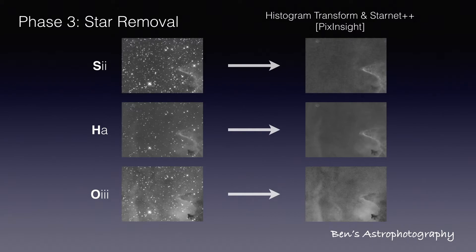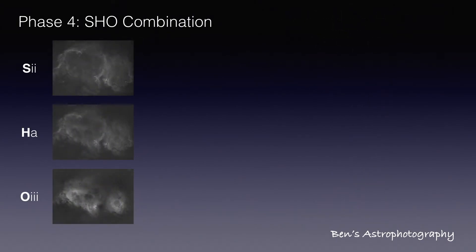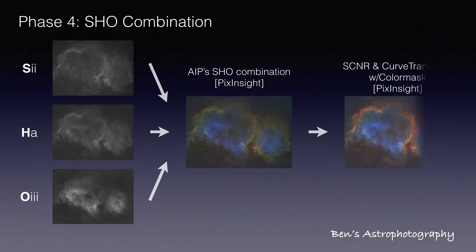When the stars are gone on all three masters, I move on to phase four to do SHO combination with AIP's script. I will get this greenish image — but don't worry, SCNR will be able to fix the green hue in one second. Then a couple of color mask and curve transformations will really bring out the nebulosity in the SHO color pattern.